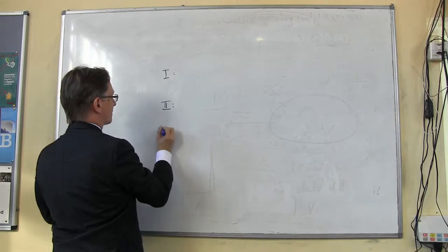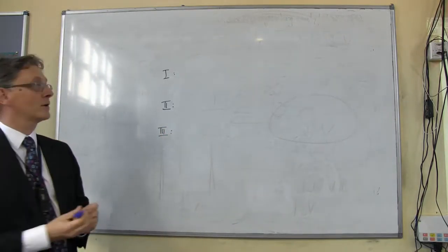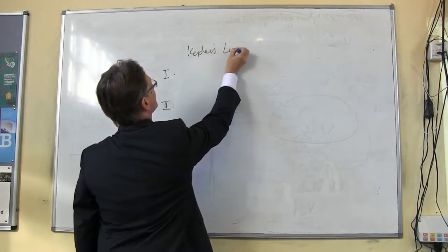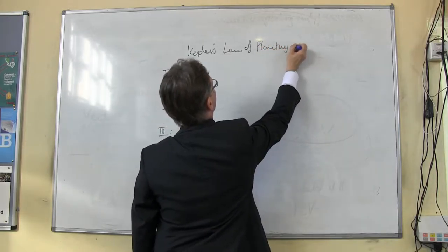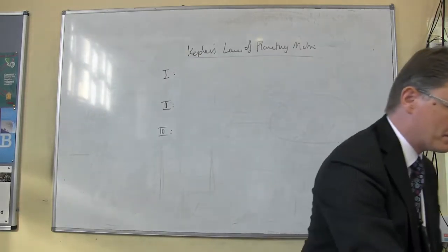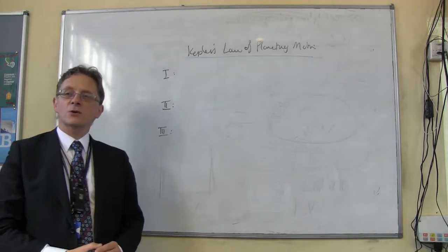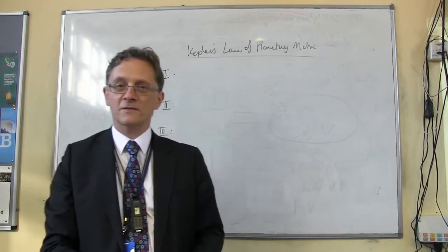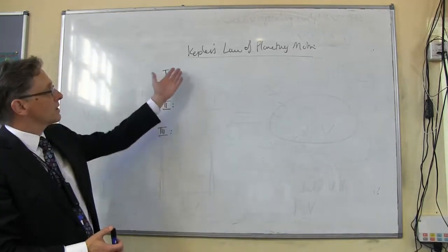Discovering the true shape of the orbits had a big impact on our understanding of how planets move. This led to three very famous laws of planetary motion. If you've got a bit of paper, it would be a good idea to jot these down: Kepler's laws of planetary motion.